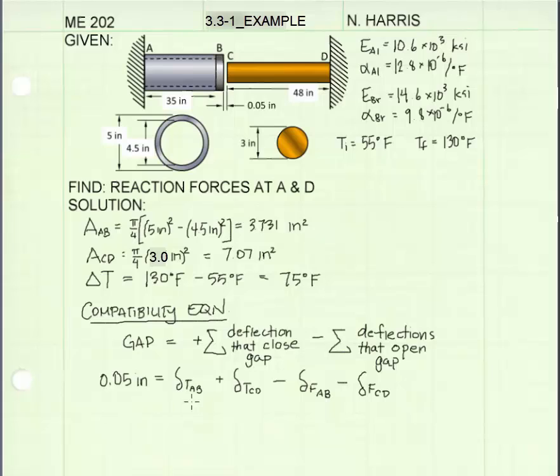Here I've written the compatibility equation. The gap, which is 0.05 inches, is equal to the sum of all these deflections that are going to occur, both thermal deflections and force deflections. The thermal deflections for both members AB and CD will tend to close the gap, so they're given a positive value. The force deflections, which are compressing the members, are tending to open the gap, so they're given negative values.